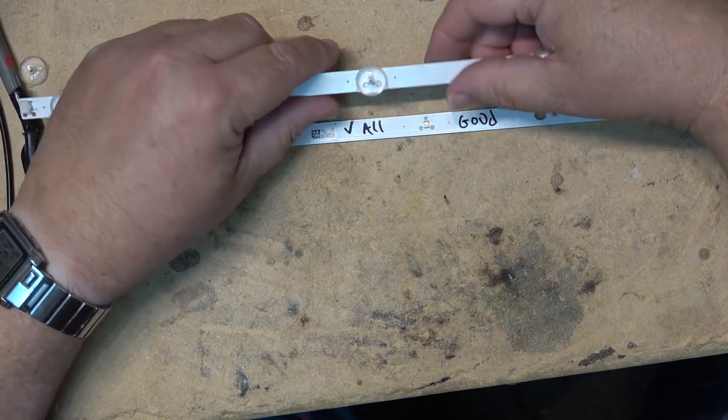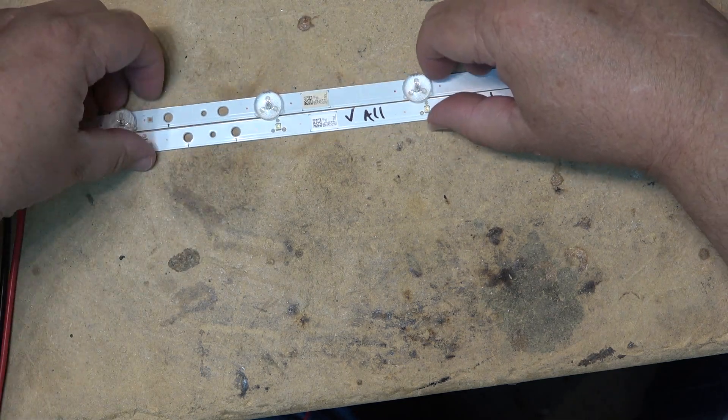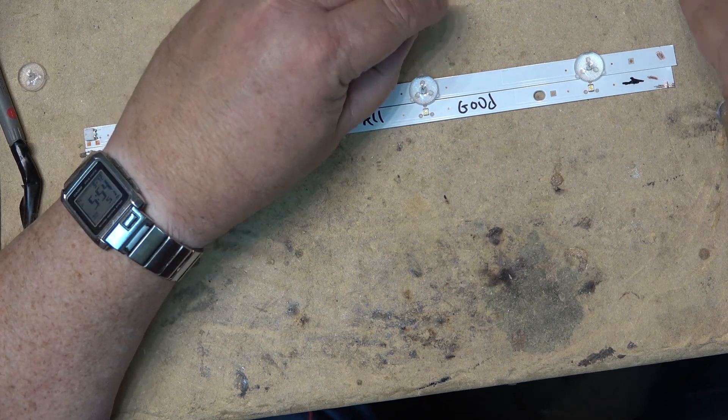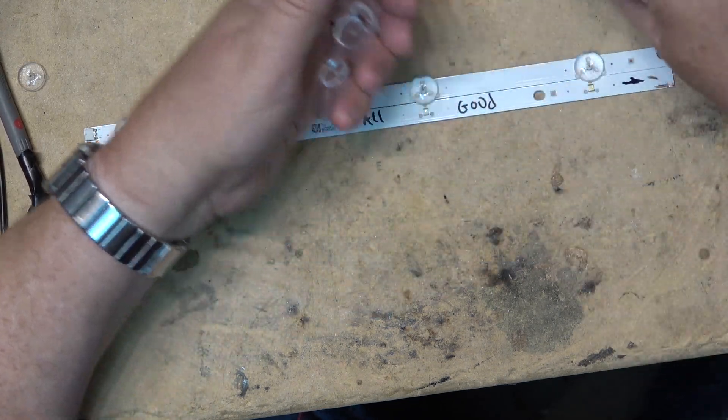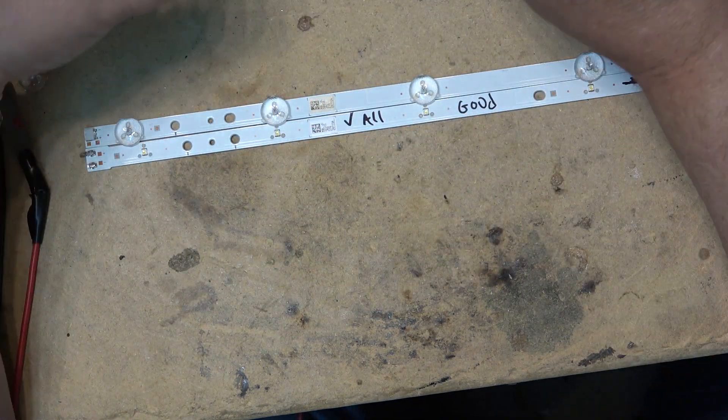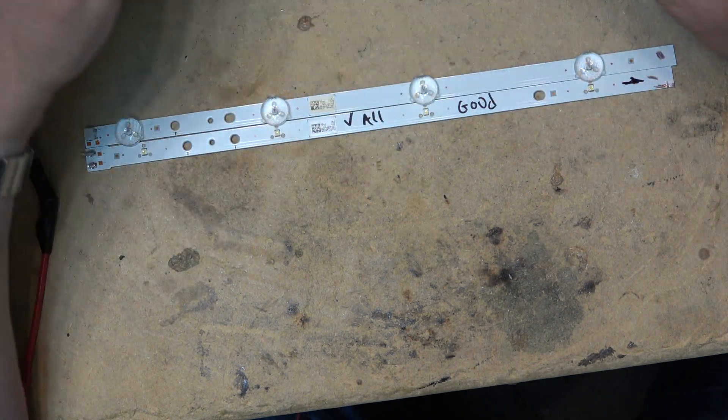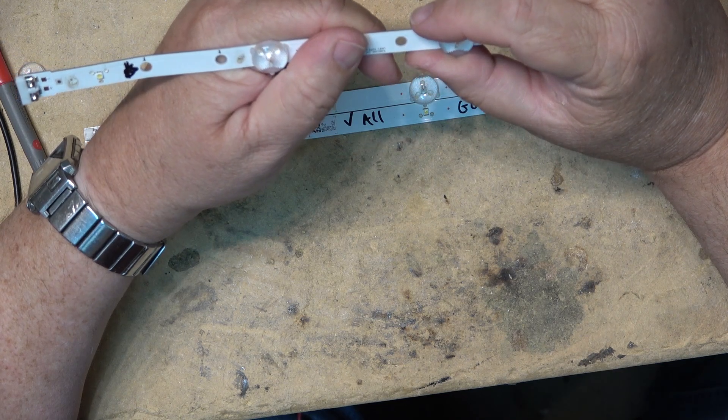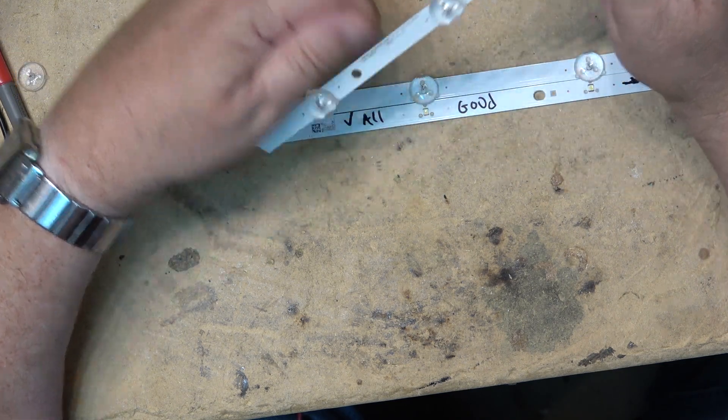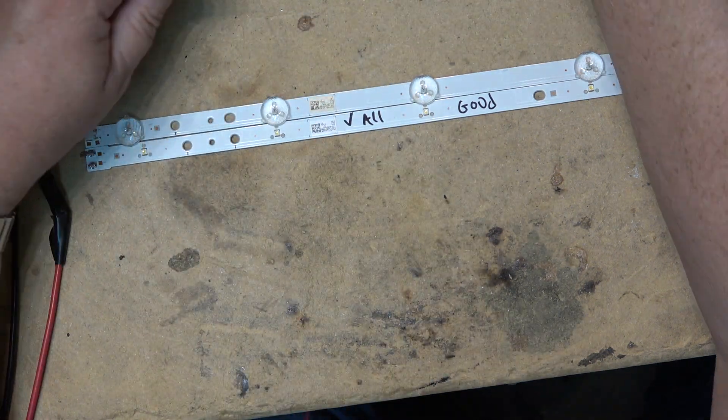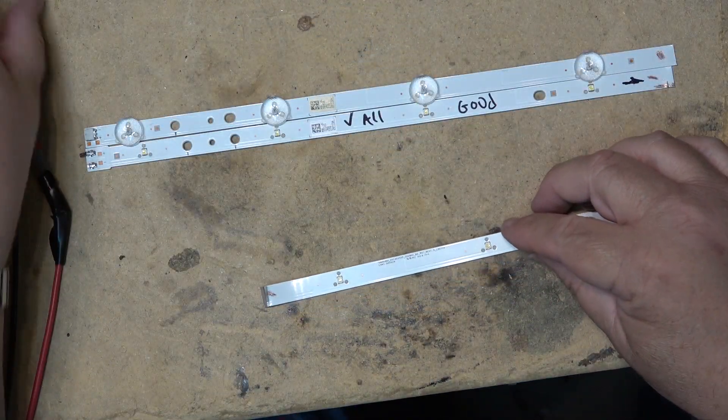Anyway, that's what you can do with the dead LEDs from TVs. See, the other ones, there were so many of them that were shot on this panel that the only two strips that were salvageable were these two. And even out of these two here, a couple more of them went bad. Like on this panel here, this one was bad, and the other strip, a couple of them went bad.